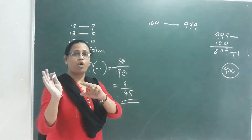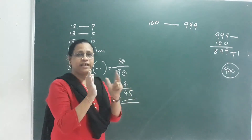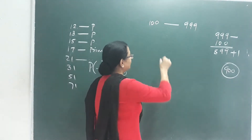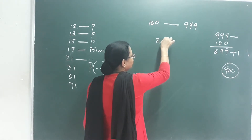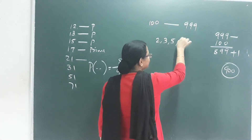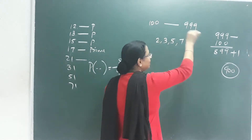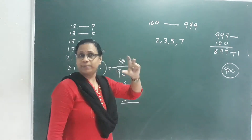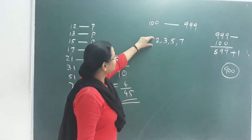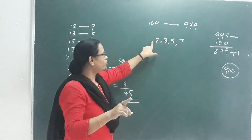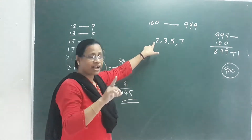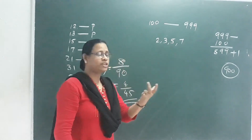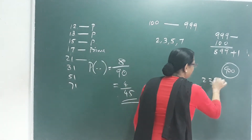How do we find the favorable outcomes among these 900 numbers? We need the product of digits to be prime. The single-digit primes are 2, 3, 5, and 7. We need the product of three digits to equal one of these primes.